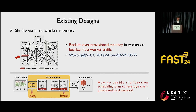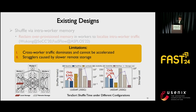Second, shuffle via in-memory partitions the application DAG into subgraphs and schedules functions in a subgraph to the same worker, then reclaims over-provisioned memory in the workers to localize intra-worker traffic. However, as cross-worker traffic dominates and cannot be accelerated, and slower remote storage leads to stragglers, the performance gains from this approach are limited. As shown in the figure, this approach can only reduce shuffle time by 9.94% and 11.39% compared to baseline in different configurations.